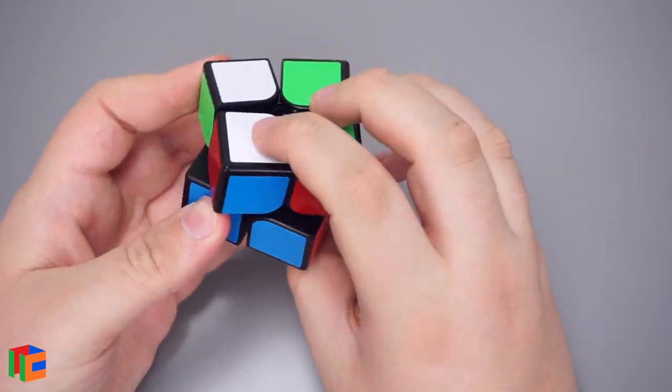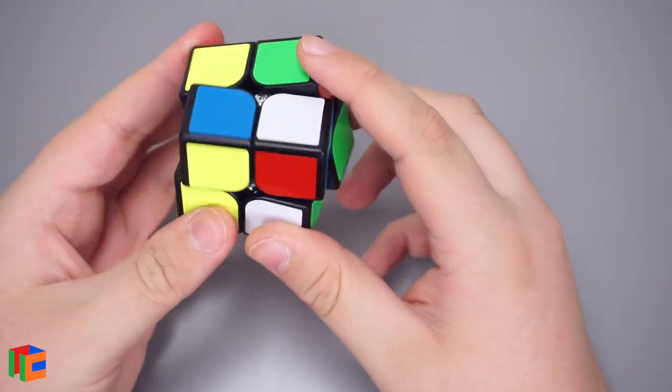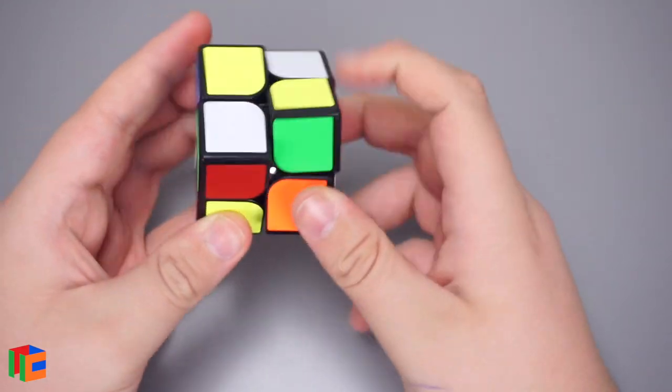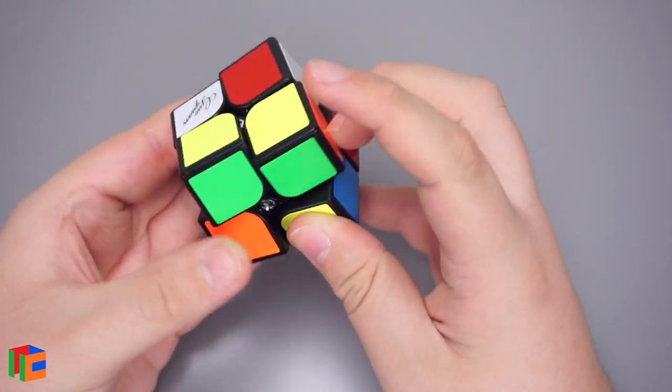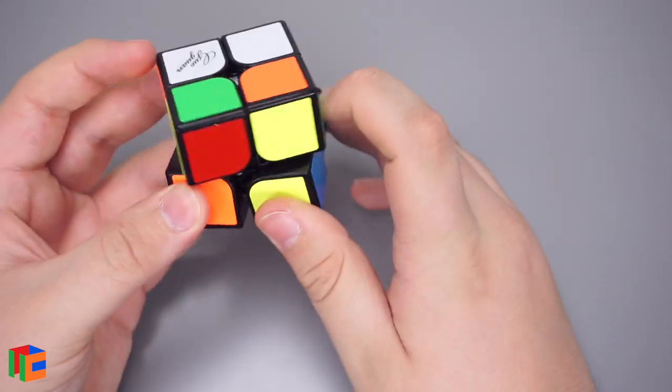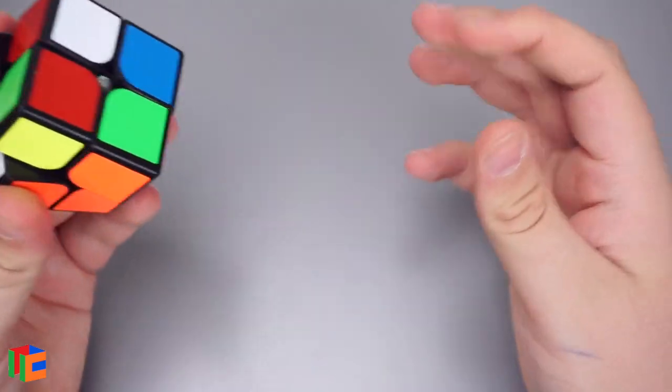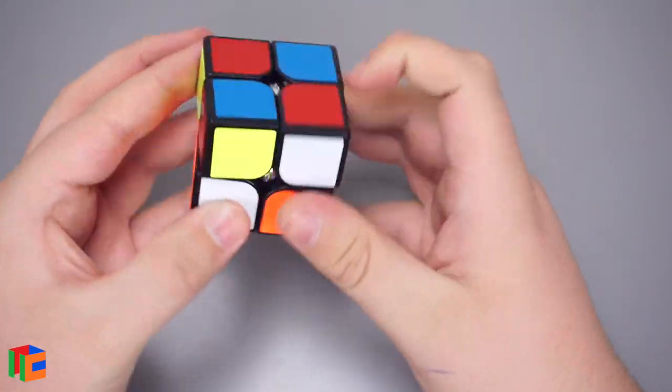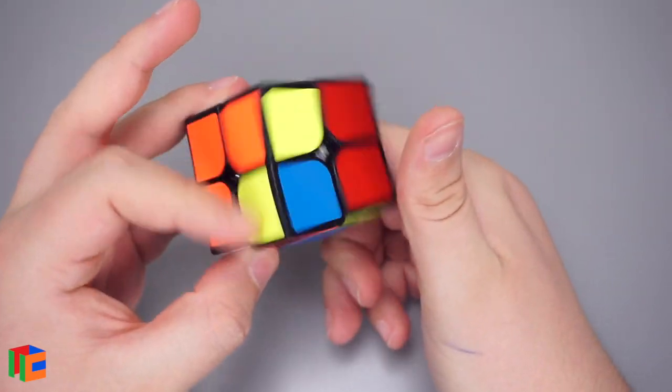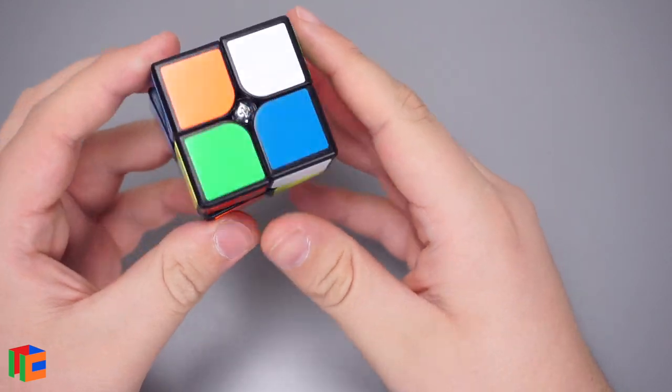Yeah, I'm not a fan of this 2x2. 2x2s these days have been pretty good at staying pretty much totally stable. But, this cube is just... Maybe it's just too loose, but it feels like there's just an overall instability. Let's go ahead and do a solve.